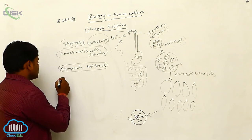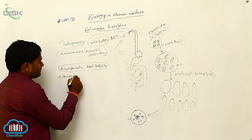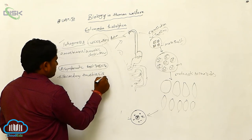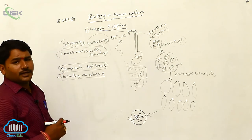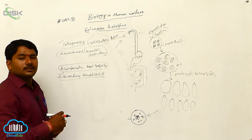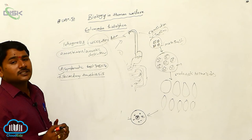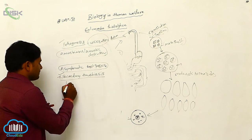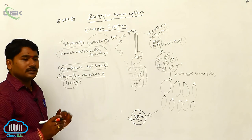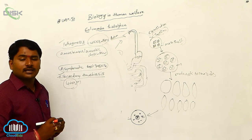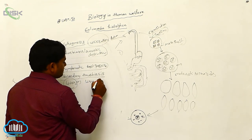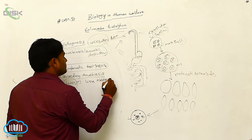Sometimes secondary amoebiosis is also seen. Here, trophozoites are transferred to other organs, especially the liver. This is called liver abscesses — they enter the liver and cause ulcerations there.